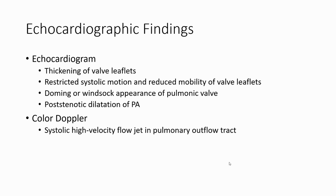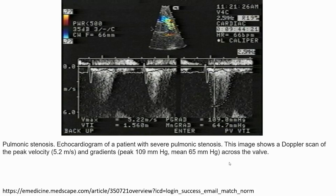Echocardiography findings include thickening of the valve leaflets, restricted systolic motion and reduced mobility of valve leaflets, doming or wind-sock appearance of the pulmonary valve, and post-stenotic dilatation of the pulmonary artery. On pulsed Doppler, we can see systolic high-velocity flow jet in the pulmonary outflow tract. A Doppler scan may show a peak velocity around 5.2 m/s and peak gradient of 109 mmHg, with a mean gradient of 65 mmHg across the valve.